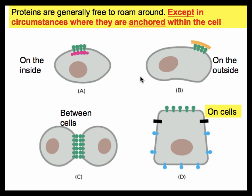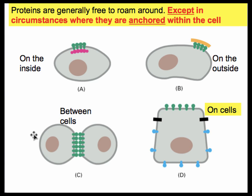Today we know that in certain circumstances, cells have evolved to contain proteins in particular locations. In panel A, green proteins are held in a cluster by molecules attached to the inside, preventing migration — an example of a lipid raft. In panel B, the anchoring molecule is on the outside, also preventing migration. In panel C, cells adhere to each other through protein-to-protein contact — a great example being skin cells, where this type of cell junction is classified as a desmosome.